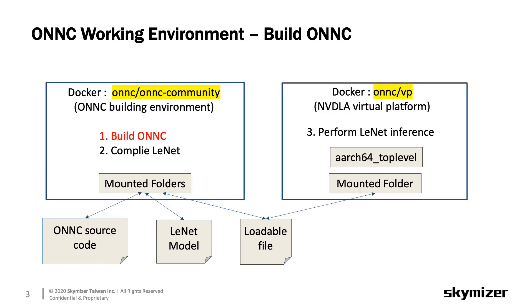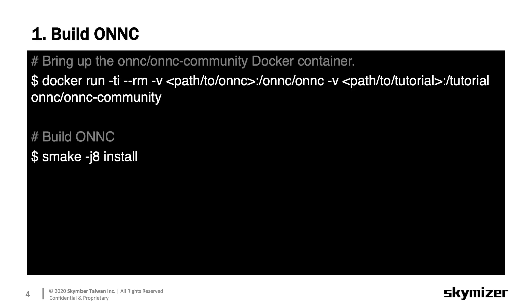Once everything is ready, the first thing is to build the Onyx binary from its source code in the Onyx Community Docker. Although we include a copy of Onyx source code in the pre-built Docker image, we strongly encourage you to mount the cloned source code in your preferred folder to the Docker container. By doing so, you can make sure that any changes made to your local copy will keep intact even after the container is killed. In addition, you may also use your favorite editor to modify code in this way.